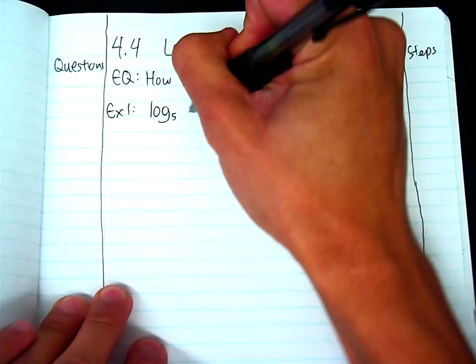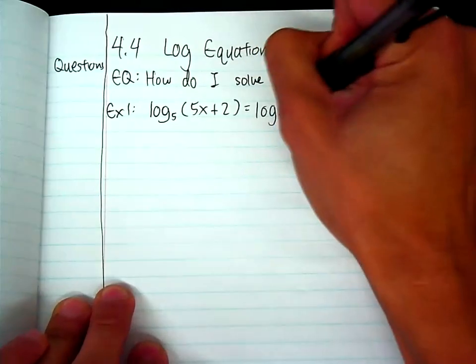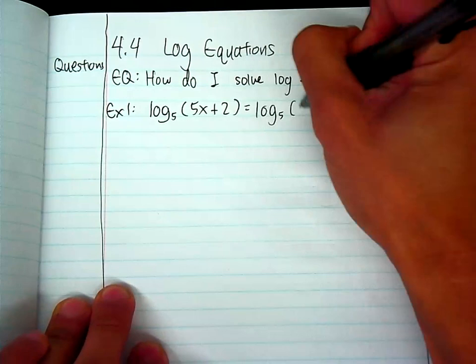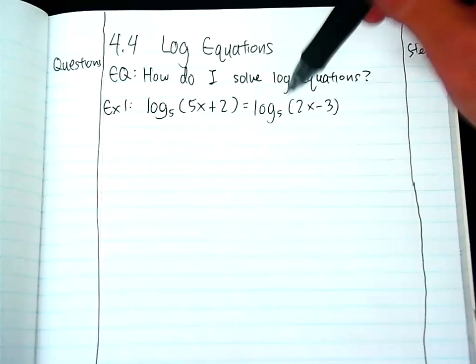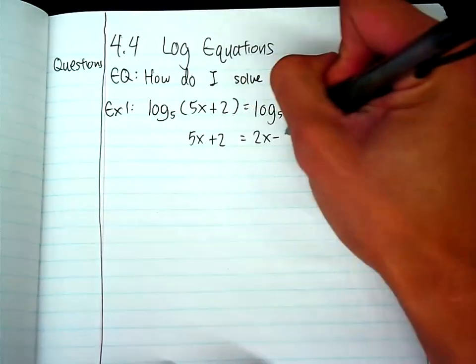So example 1 is log base 5 of 5x plus 2 equals log base 5 of 2x minus 3. So much like the beginning exponential questions, if you look, I want to make it as simple as possible for myself. So if you look, they're both log base 5, and it seems like they equal each other. So I can literally drop the logs, and I can make it 5x plus 2 equals 2x minus 3.